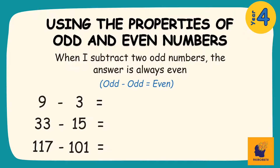We can check that this is true by solving each of these problems. 9 take away 3 is 6, an even number. 33 take away 15 is 18, an even number. And 117 take away 101 is 16, an even number.